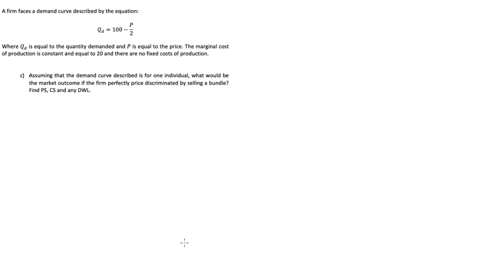We're asked in the question: assuming that the demand curve described is for one individual, what would be the market outcome if the firm perfectly price discriminated by selling a bundle? We need to find producer surplus (PS), consumer surplus (CS), and any deadweight loss (DWL).